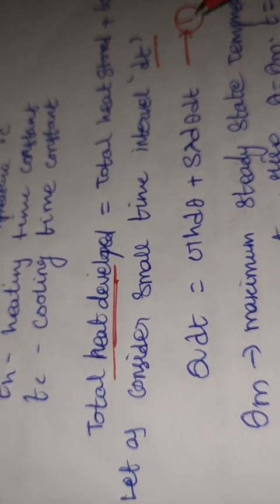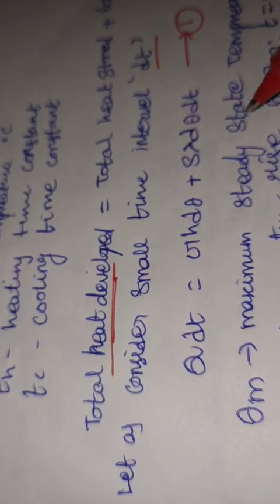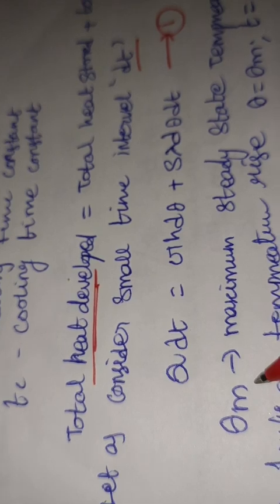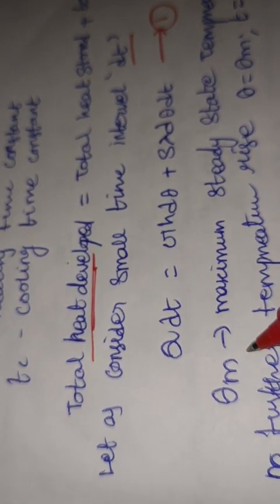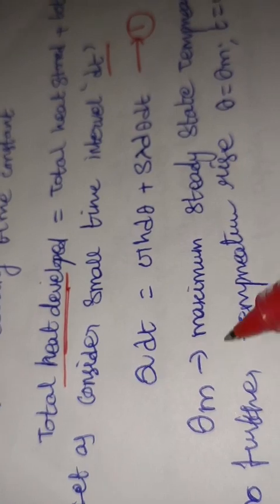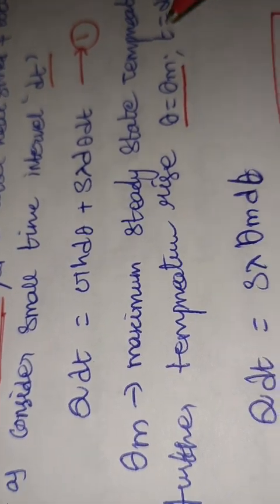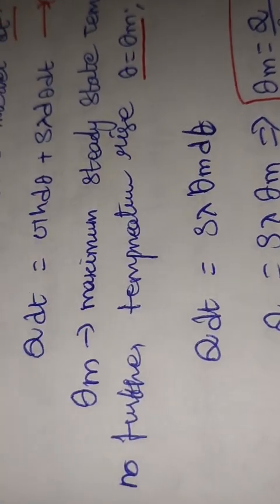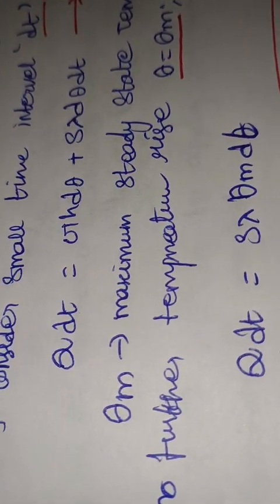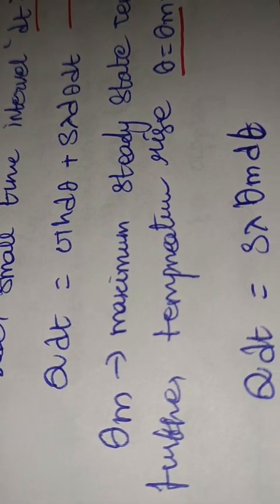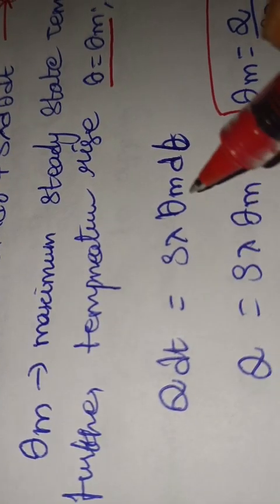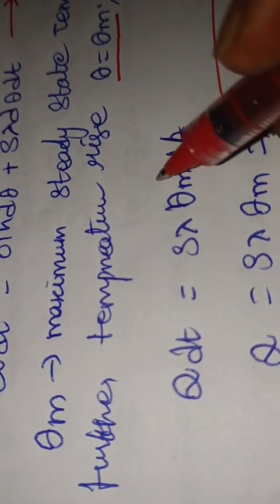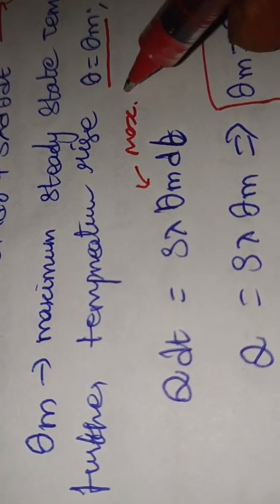If we consider the maximum temperature rise theta_m — once the maximum temperature is reached during the heating process, there is no further temperature rise. So we can set theta = theta_m and t = infinity. Rearranging equation one gives: Q·dt = S·λ·theta_m·dt, where theta_m is the maximum or steady-state temperature.